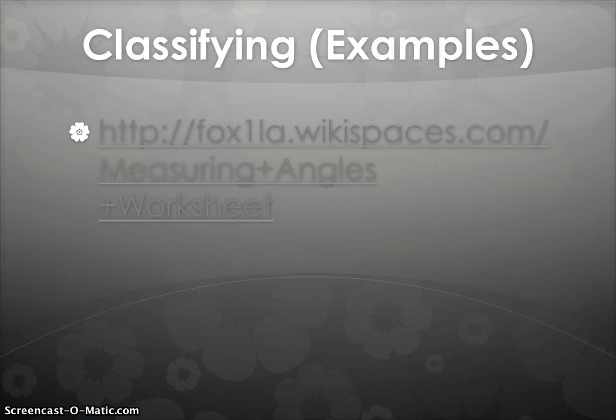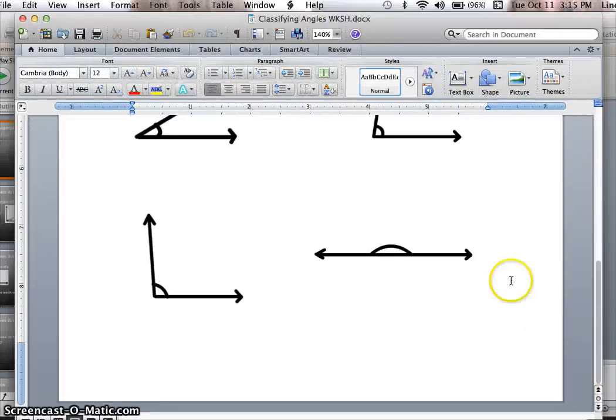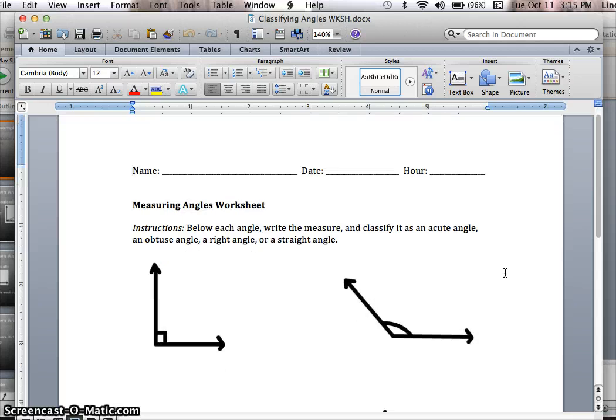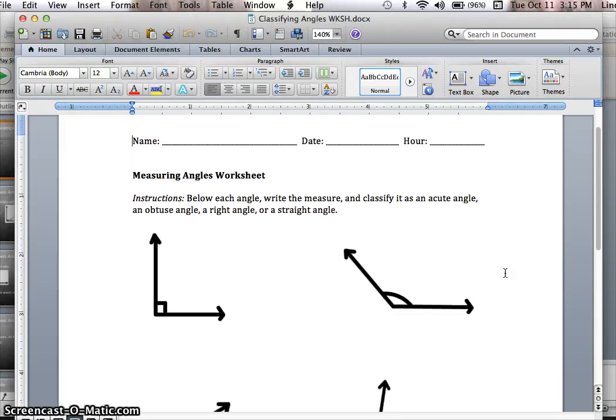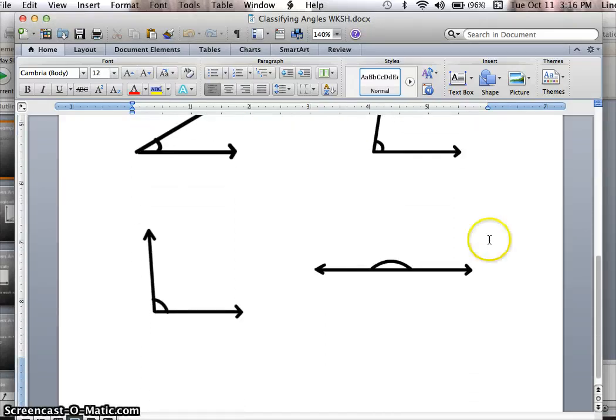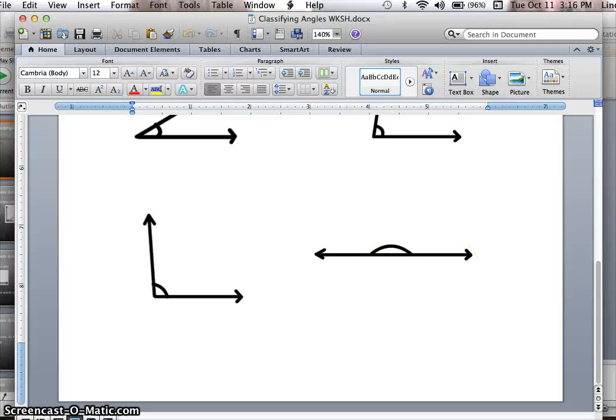Now, for this classifying angles worksheet, let's pull that up really quick. I want you to look at this as a class after I finish the lecture, but I'll go over the instructions right now. What I want you to do is use your protractor to write the angle, the degree, and be sure to put that degree sign in there. And also, I want you to classify it as being either acute, obtuse, right, or straight. So I want you to look for those hints that I've already pointed out to you, and I'm sure it will be no problem at all for you.